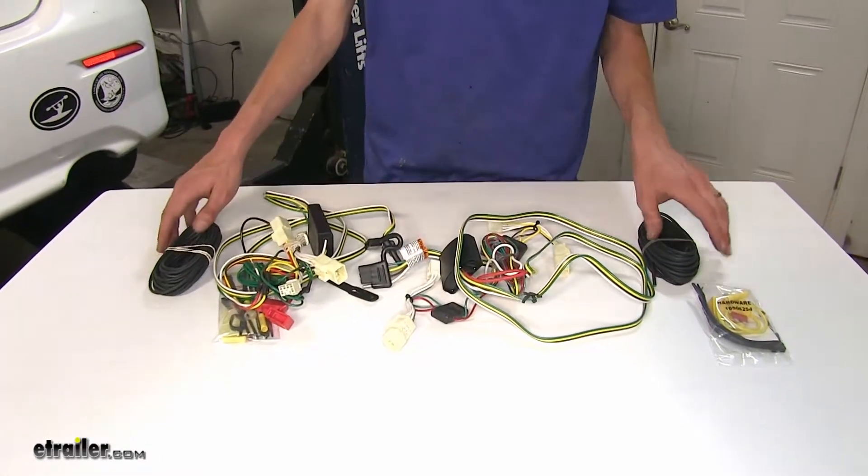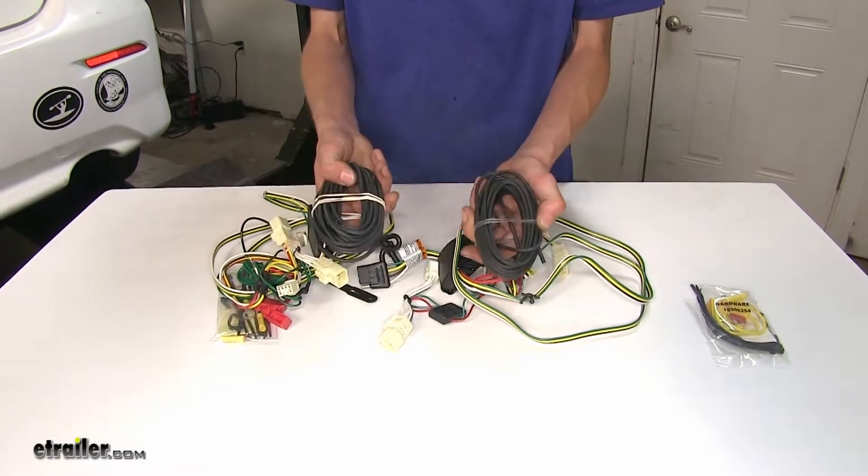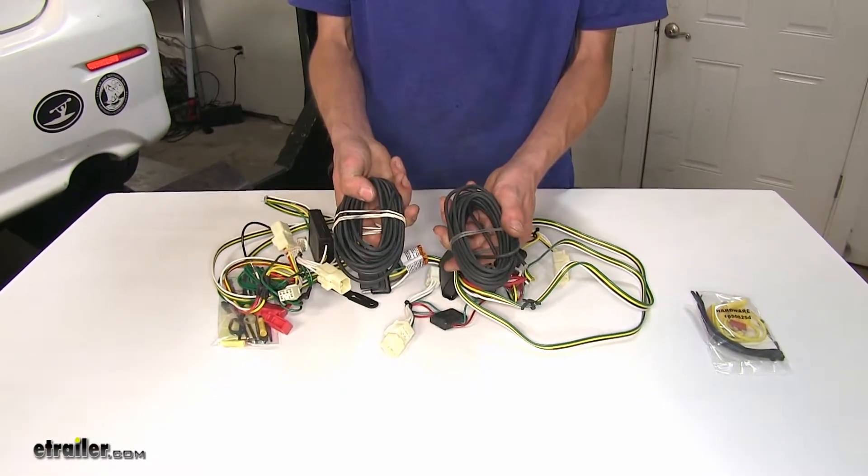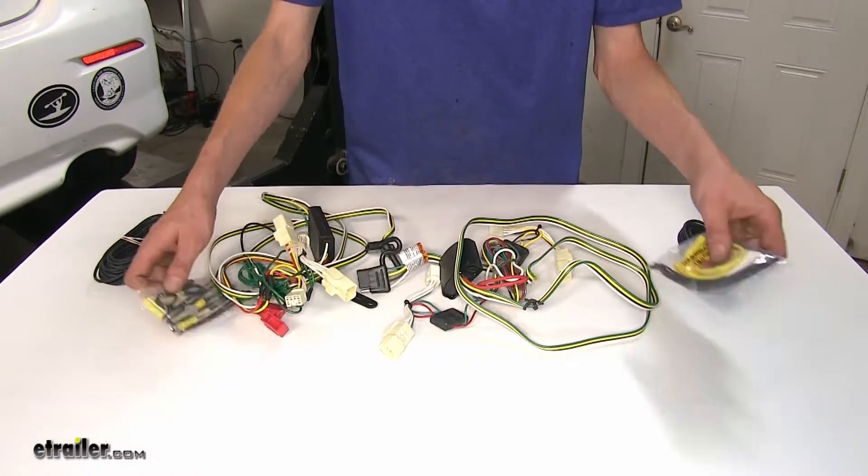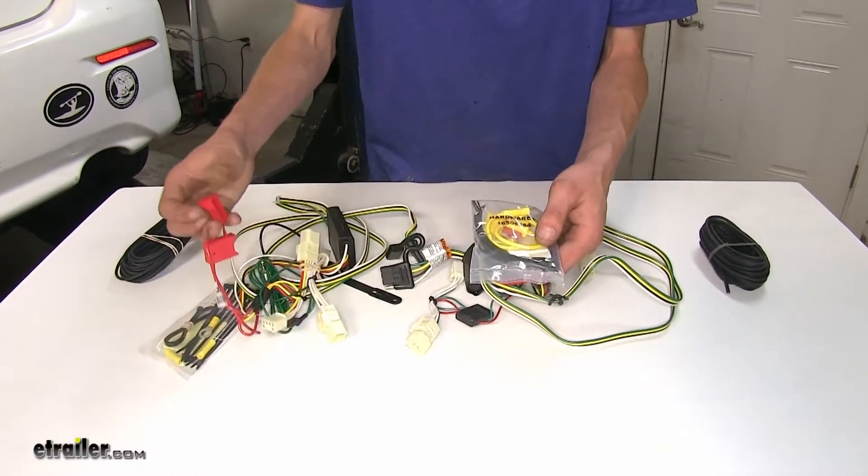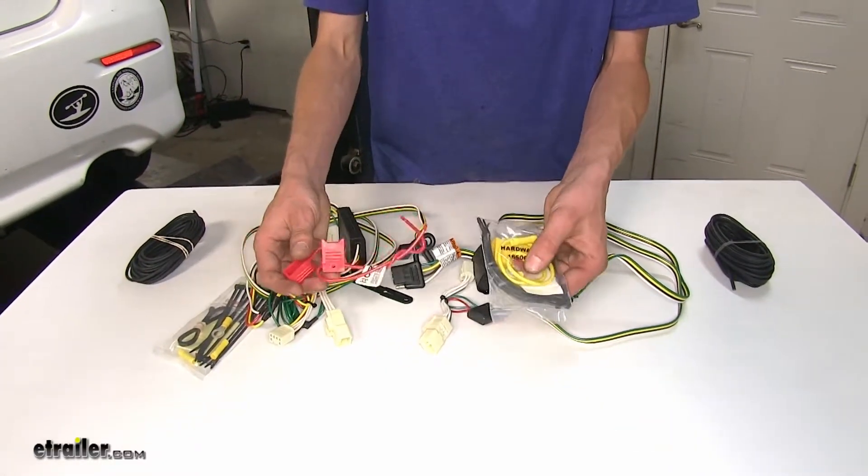The only thing we're going to run outside the vehicle on a permanent basis is our black power wire here, where it will connect directly to our battery using a provided fuse holder with 10 amp fuses.